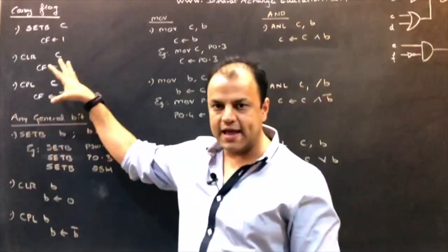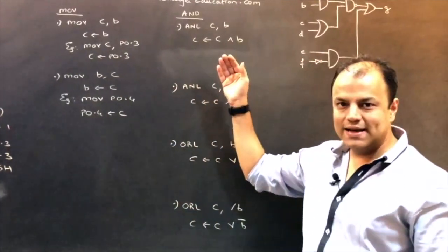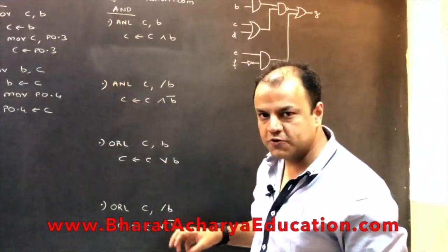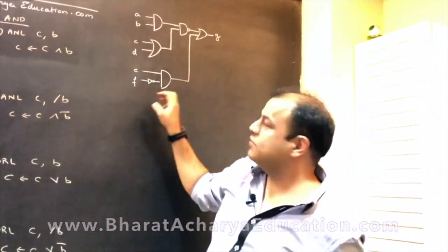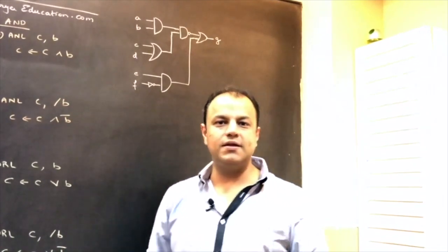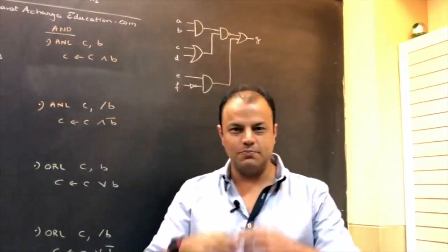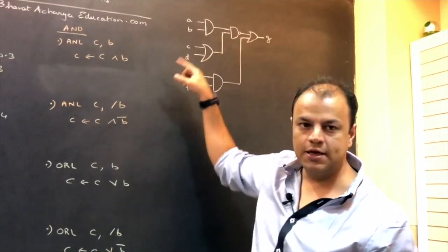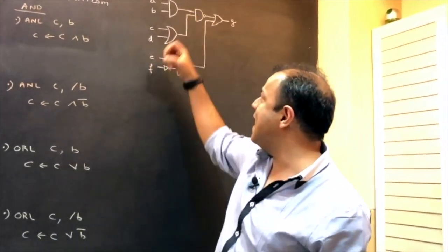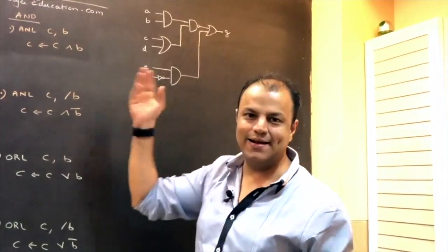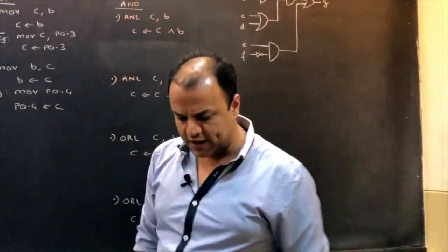So you have instructions working on carry flag, instructions working on general bits, movements between the bit and the carry flag, and logical AND and logical OR — which I'm going to show you with small circuits. Finally, I'll take up a proper exam question, a 10-mark question, where they give you a circuit and tell you to simulate it — meaning by software, find out the value of G based on various values of A, B, C, D, E, F. So we'll first learn the instructions, then see a program based on that.